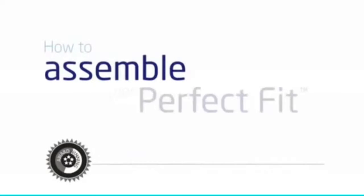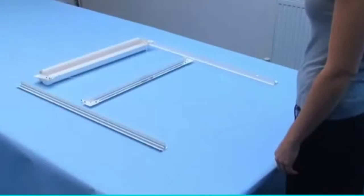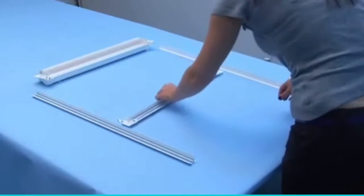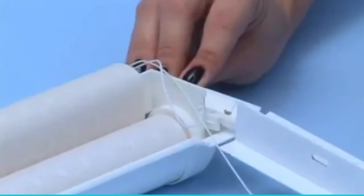How to assemble your perfect fit blind. In your pack, you will have your drawn up blind with attached bottom bar and two side frames. Spread out the blind, bottom bar, and side frames face down on a clean, even surface.